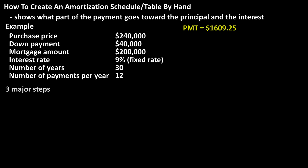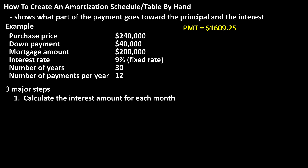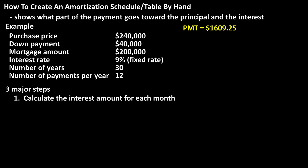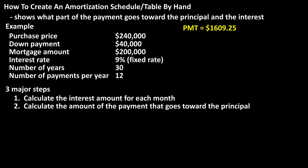There are three major steps in creating a table. Step one: calculate the interest amount for each month. Step two: calculate the amount of payment that goes towards the principal. And step three: calculate the new principal amount after the payment.